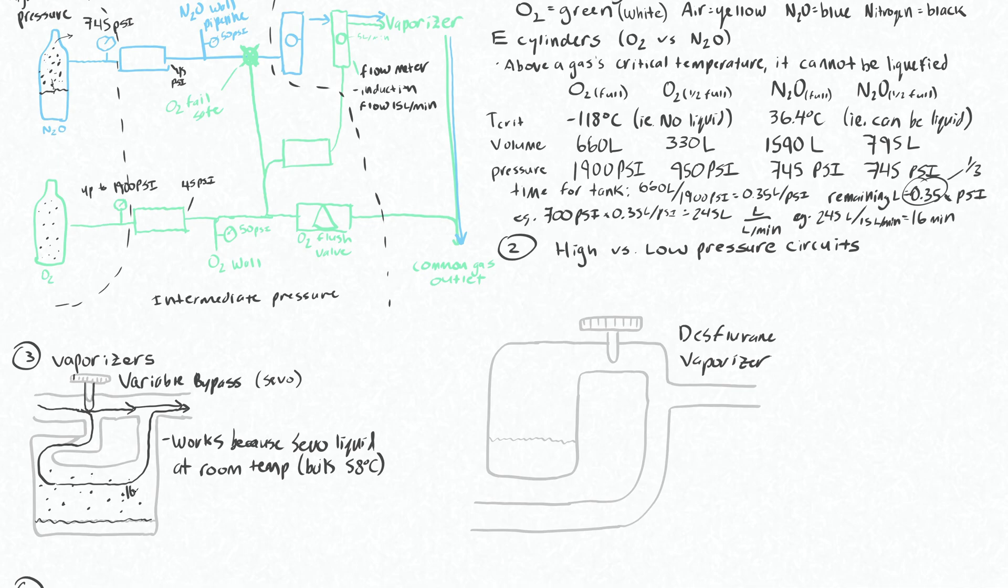The saturated vapor pressure of sevo is about 160 millimeters of mercury at room temperature. Knowing that there is this somewhat reliable concentration of sevo in the gas phase in this container, it can send the air through and pick this up and output it.